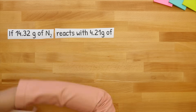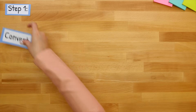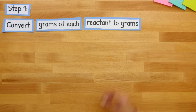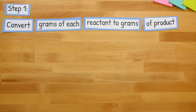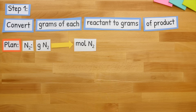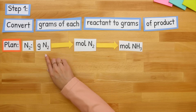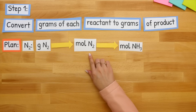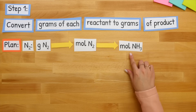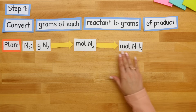Let's move on to step one: convert grams of each reactant to grams of product. Since we're going from grams of each reactant, our first reactant is N2. So let's plan this out. For N2, we're going to go from grams of N2 to moles of N2 using our molar mass of N2, and then from moles of N2 go to moles of NH3.